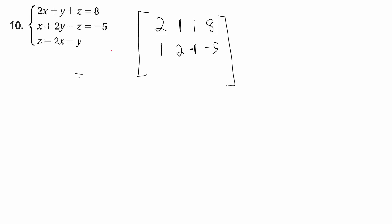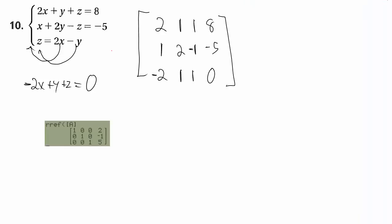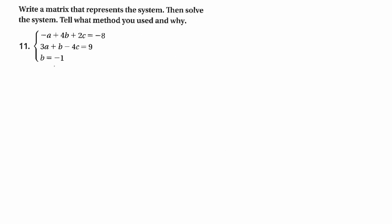The next one that we have is I could solve using a matrix. Again, you could do other methods, but in order to get it as a matrix, you got to get the x, y, and z on the left side. So you got to rewrite that third equation. So the row that represents that would be negative 2, 1, 1, 0, because you have to change the signs in the x and the y. Put that into your equation, use your RREF command, and you get x equals 2, y equals negative 1, z equals 5. You can write it as an ordered pair, a three-dimensional ordered pair if you want, but I prefer to just write it as x equals, y equals, z equals and put the values.